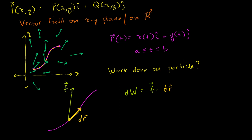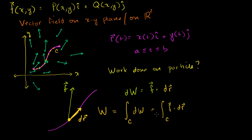We want to sum up all of the f · dr's to get the total work done, and that's where the integral comes in. We do a line integral along the curve C: work equals the line integral over C of f · dr. This might seem abstract — how do we actually calculate something like this, especially since everything is parameterized in terms of t?